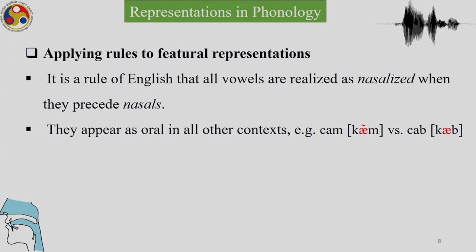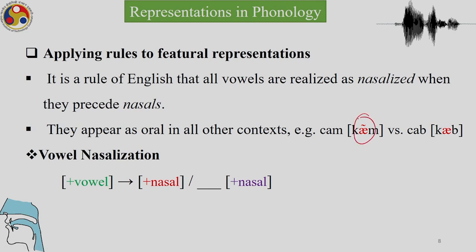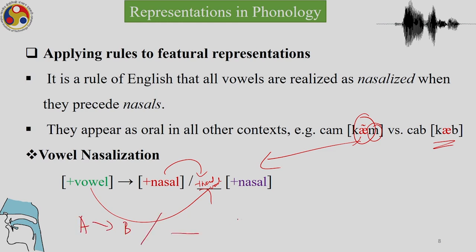There is a rule of nasalization in English: a vowel becomes nasal when there is a following plus-nasal consonant. This is the context in which the vowel changes — the plus-nasal consonant triggers nasalization of the preceding vowel. As we know from rule writing, rules are written as: A goes to B in the environment where there is a nasal. So a vowel changes to a plus-nasal vowel in the context of a following nasal consonant.